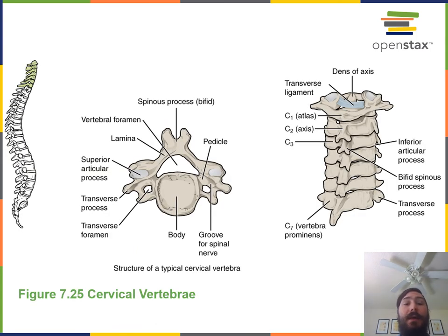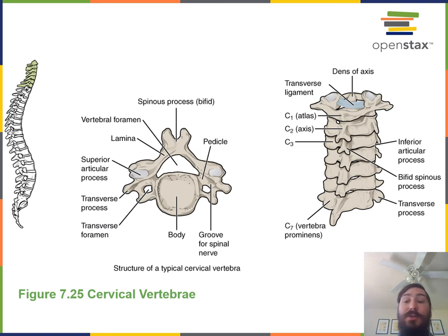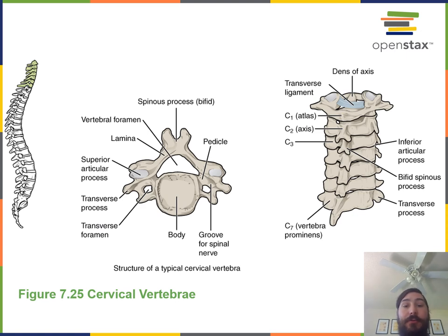Cervical vertebrae are relatively small compared to other vertebrae, as they only need to support the weight of the head. The vertebral foramen — the large opening in the center of the cervical vertebrae — is relatively large because the spinal cord is relatively large at this region, close to the brain.